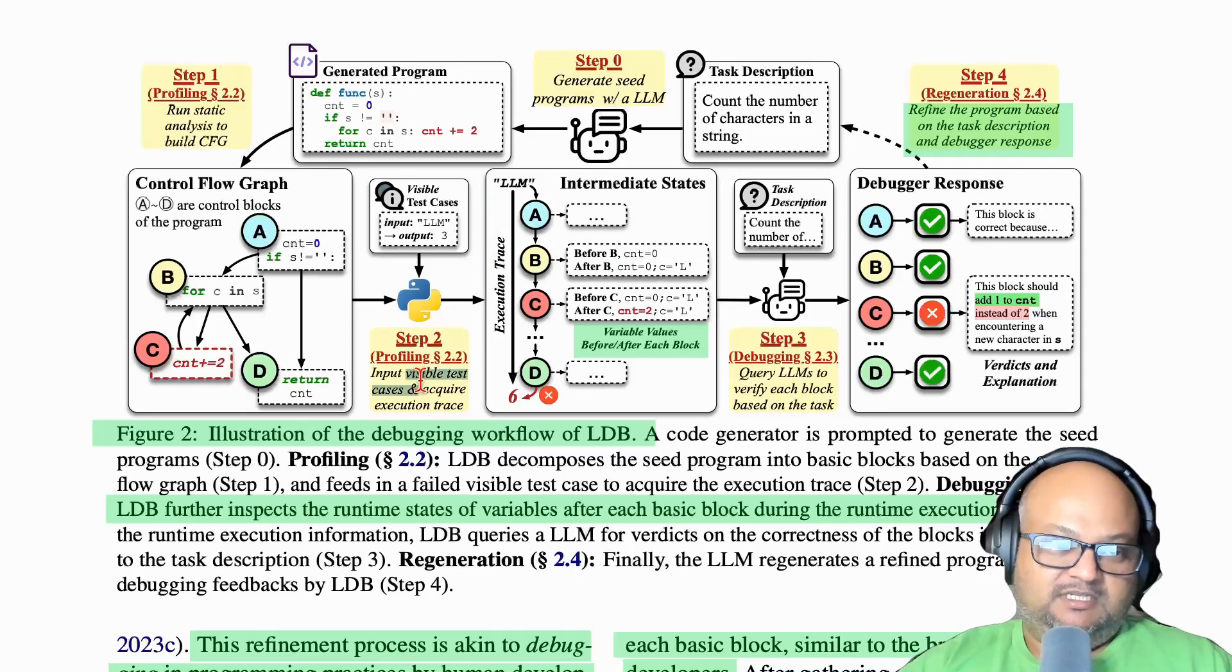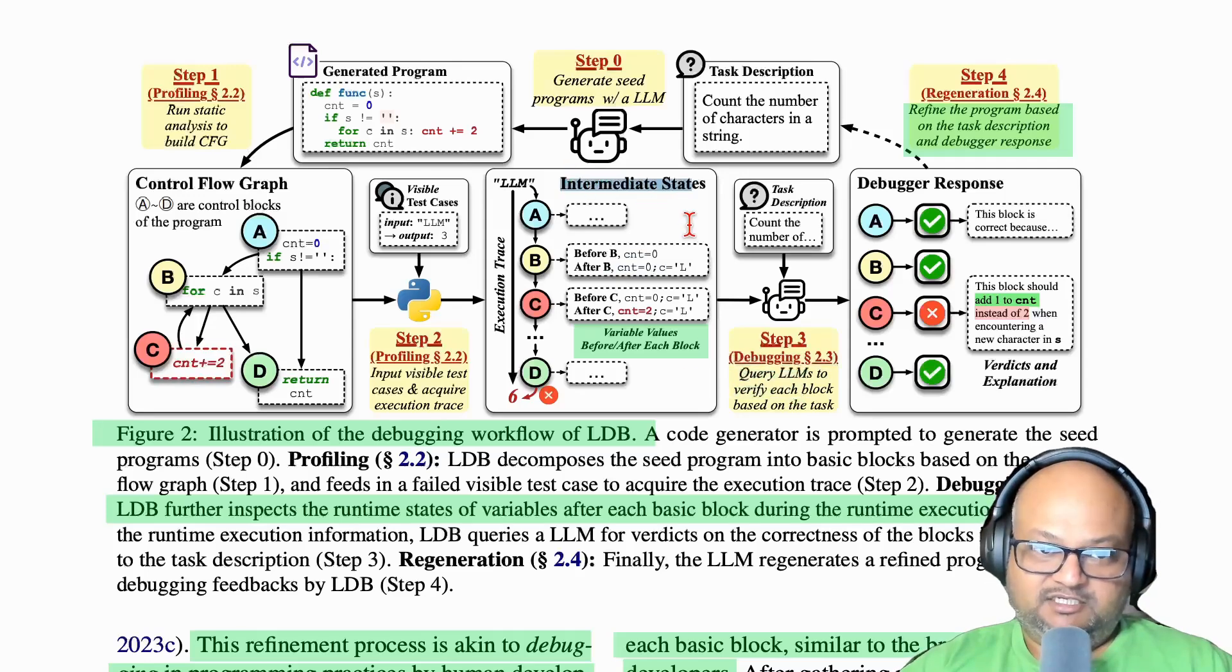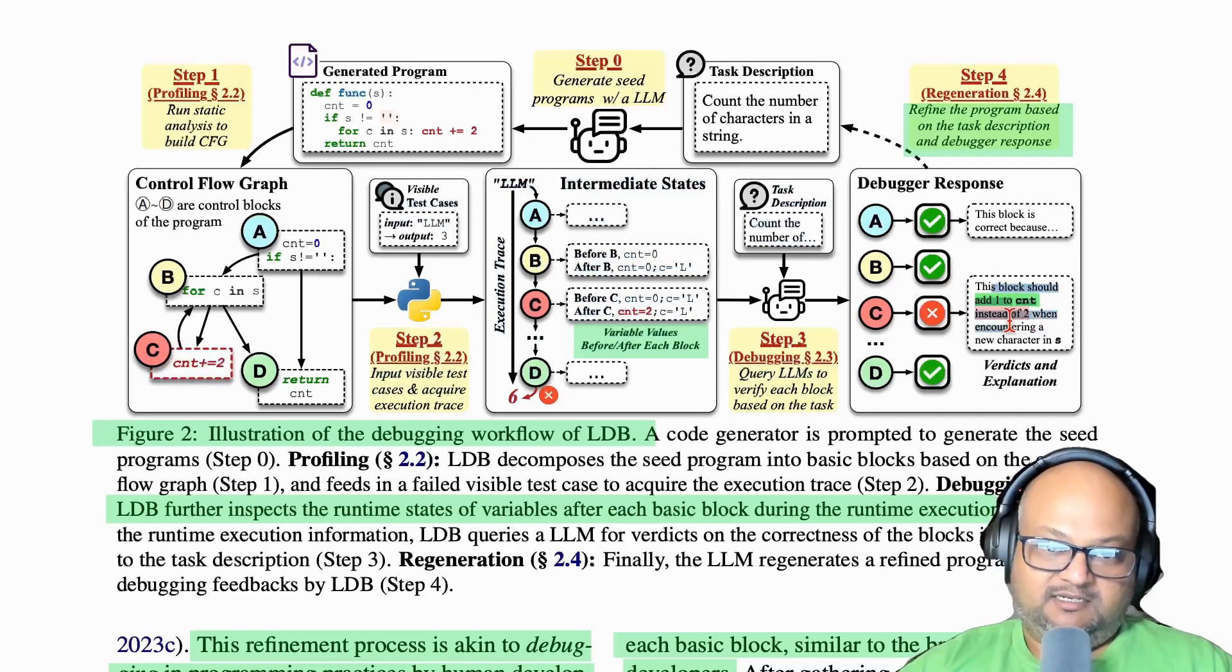You have the execution trace of a failing test case. What does this execution trace consist of? It basically consists of the values of the variables in your code at basic block boundaries. This is where step three comes in, the key debugging step, where you query the LLM with a prompt plus this execution trace to ask it if this execution trace had a bug in it, and if it did, why. This is the place where the LLM will try to find bugs by using its reasoning abilities to see if the various values of variables are consistent with the task description that the code is trying to accomplish.